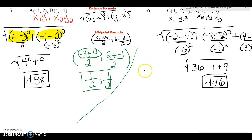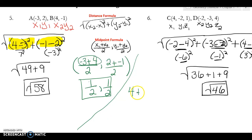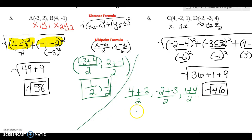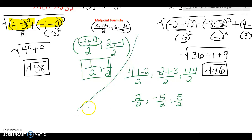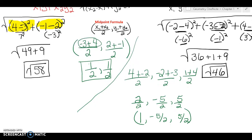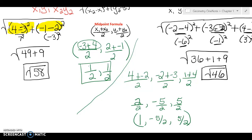For the second midpoint problem: x's give (4 plus negative 2) over 2, and y's give (negative 2 plus negative 3) over 2, and the z's give (1 plus 4) over 2. Taking care of numerators: 4 plus negative 2 is 2 over 2, which simplifies to 1. Negative 2 plus negative 3 is negative 5 over 2. And 5 over 2. You can leave them as fractions, convert to mixed numbers, or turn into decimals. When doing midpoint and distance, always take the time to label x1, y1, x2, y2 — and if there's a z, do the same process.